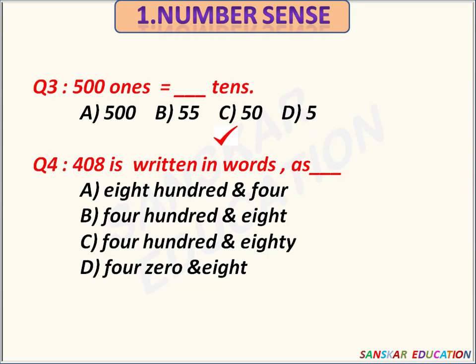408 is written in words as — options are 804, 408, 480, 408. 408 is written in words as 408. Option B is the correct answer.